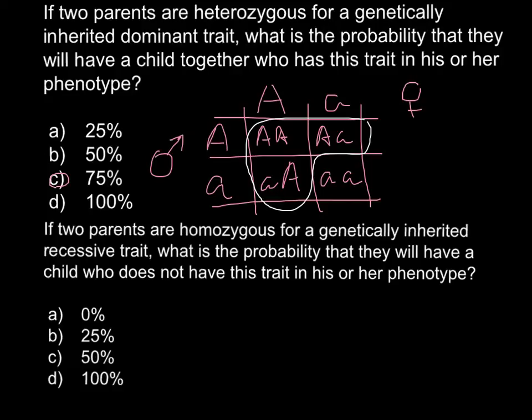And now problem 2. If two parents are homozygous for a genetically inherited recessive trait, what is the probability that they will have a child who does not have this trait in his or her phenotype? And we may also build a Punnett square here.